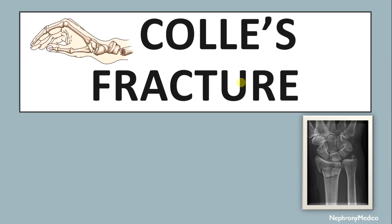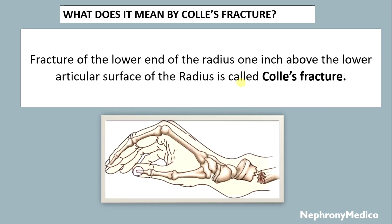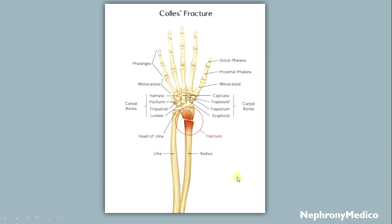Hello and welcome. Let's talk about Colles' fracture. The fracture of the lower end of the radius, one inch above the lower articular surface of the radius, is called Colles' fracture. This picture shows the fracture of the lower end of the radius — that's Colles' fracture.